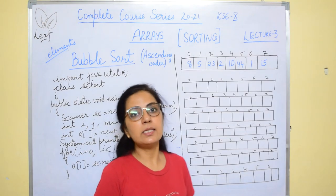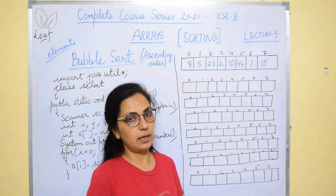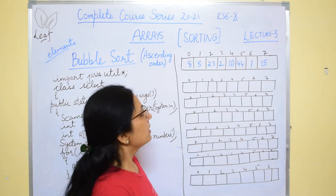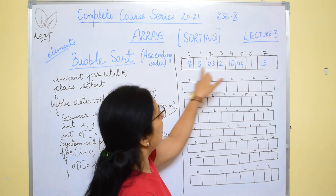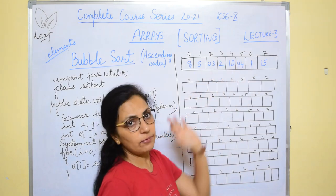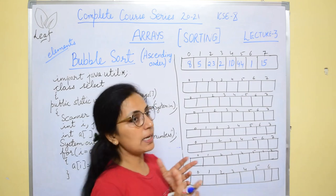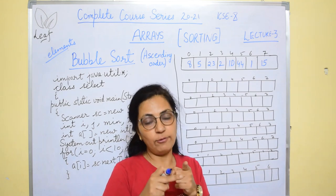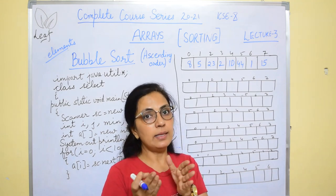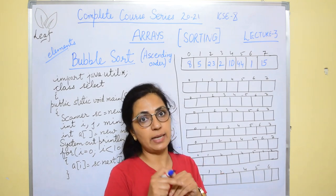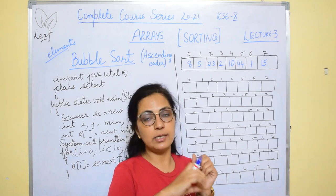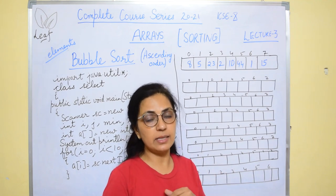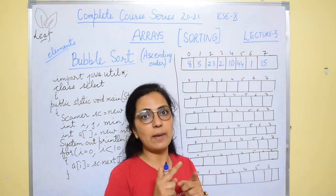Now let's see the next technique of sorting: bubble sort technique. Again first I will explain the logic, and then we will see the programming statements. Suppose I have taken 8 elements in the array: 8, 5, 23, 2, 10, 44, 1, 15. Now in this technique, adjacent 2 elements are compared, and if you are sorting in ascending order, the smaller value will be swapped at that time only. It is not like selection sorting where you select a specific item from the entire list and then the swapping is done.